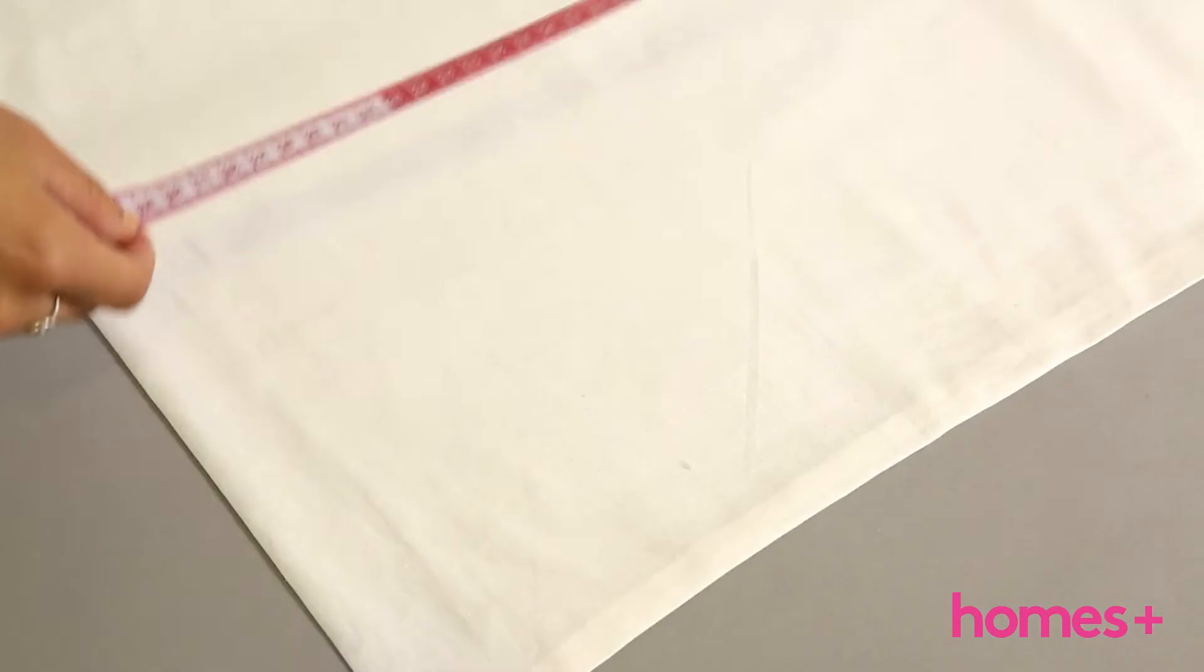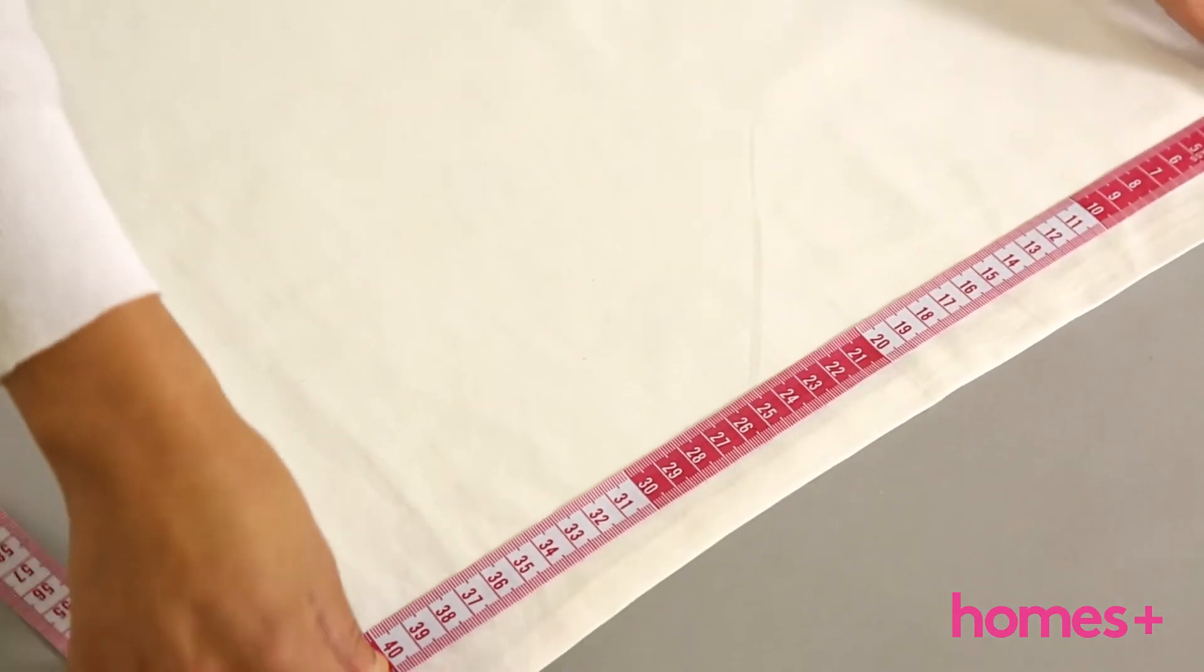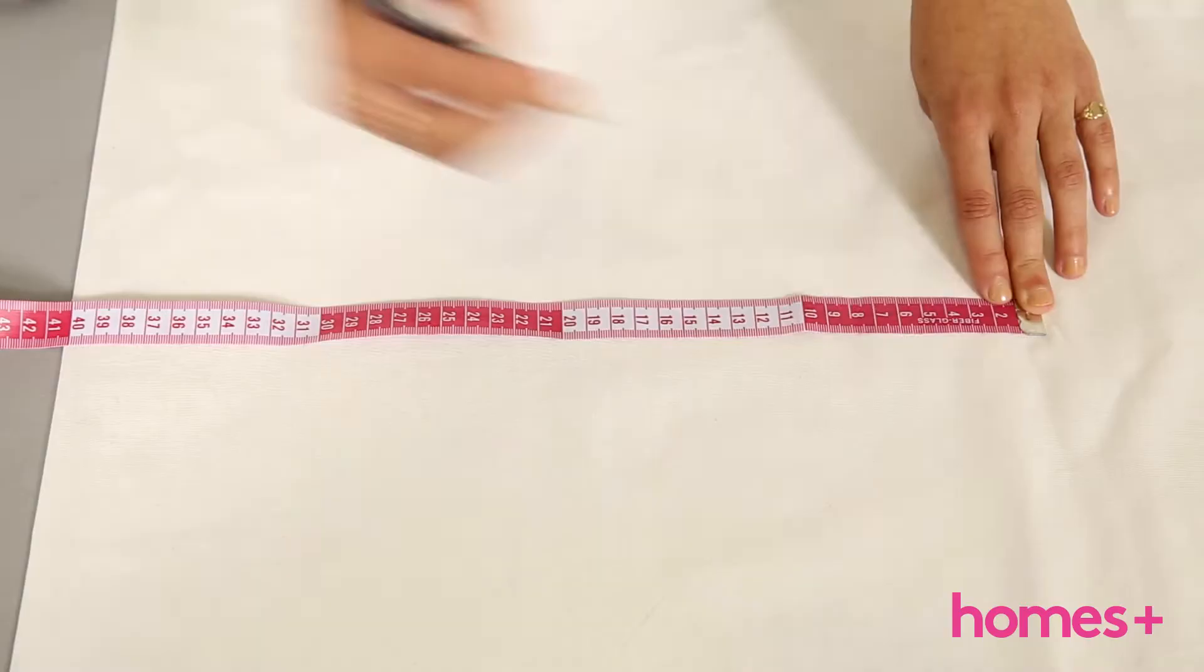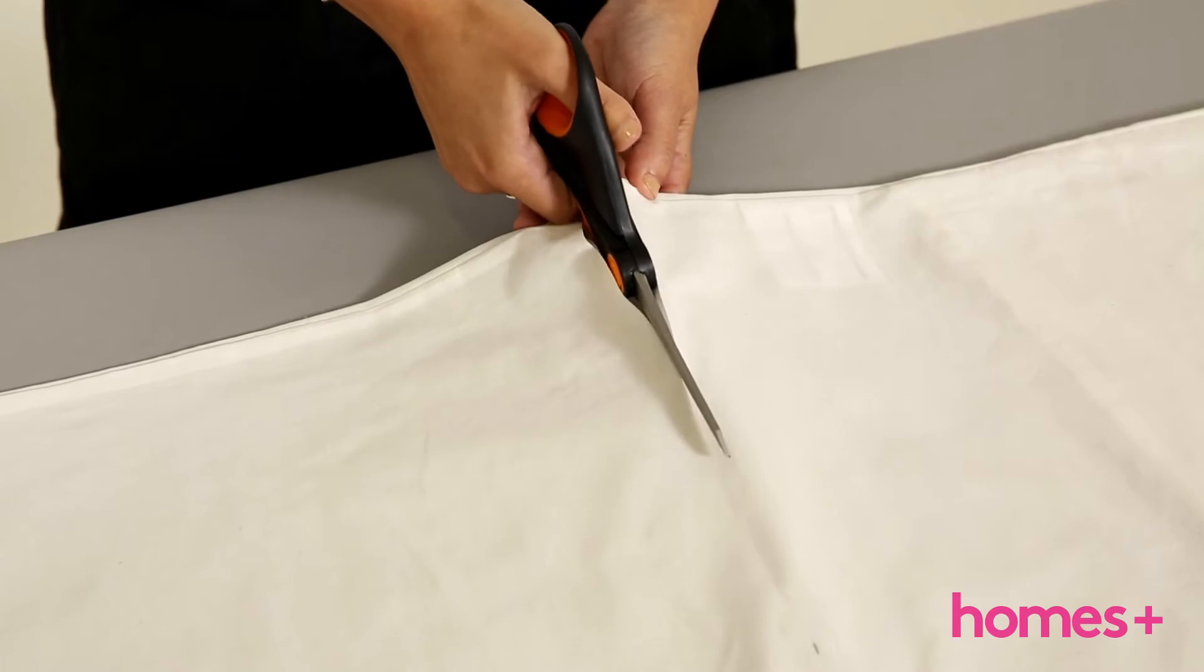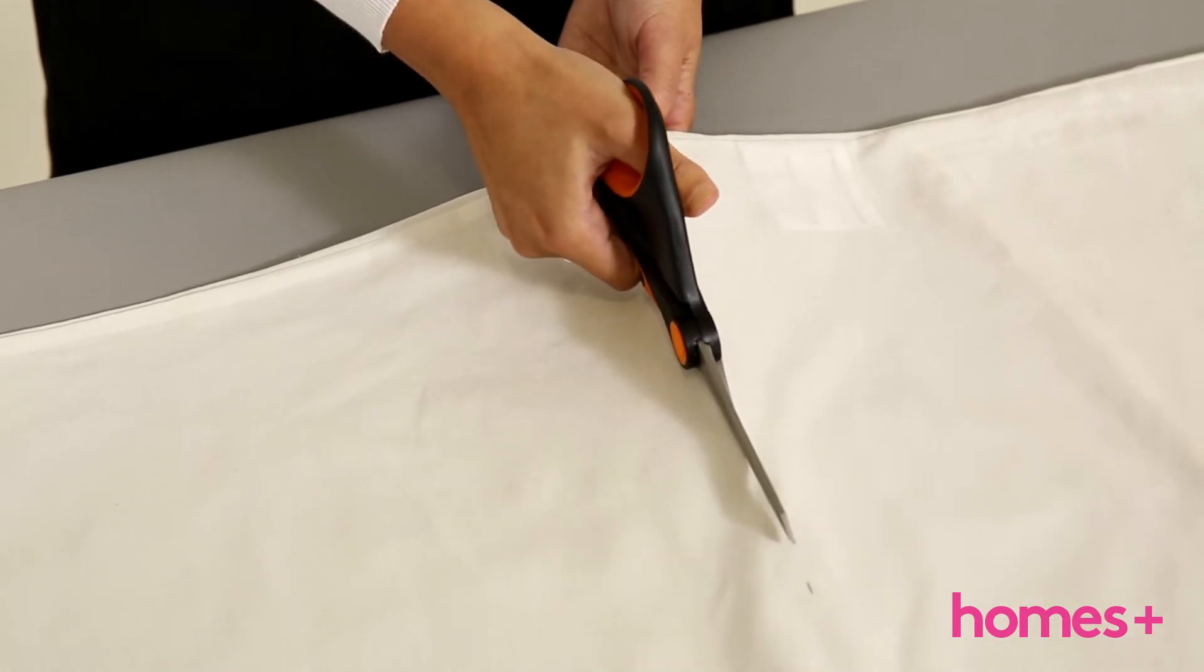Handbag. Step 1. Turn the pillowcase inside out. Mark with a pencil approximately 40 centimeters up from the bottom of the pillowcase at the center and edges. Cut off the excess fabric.